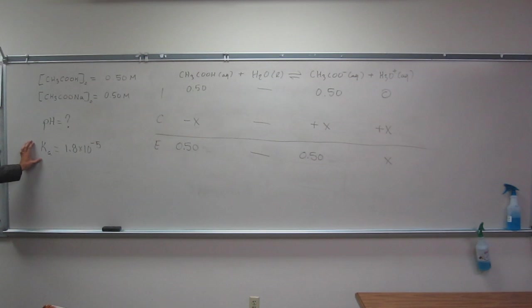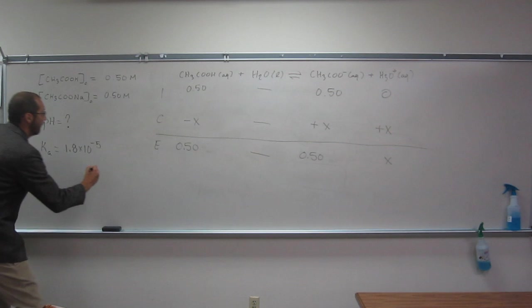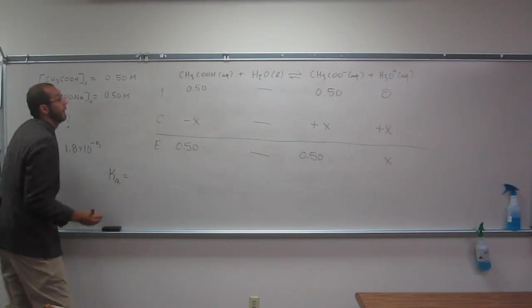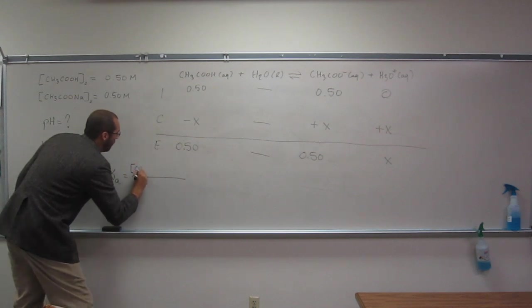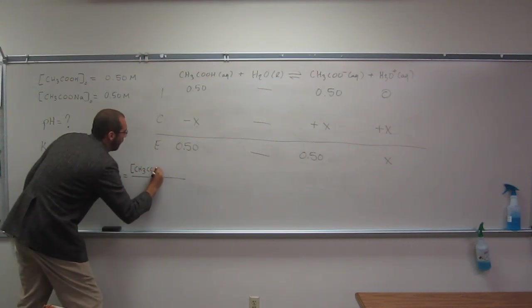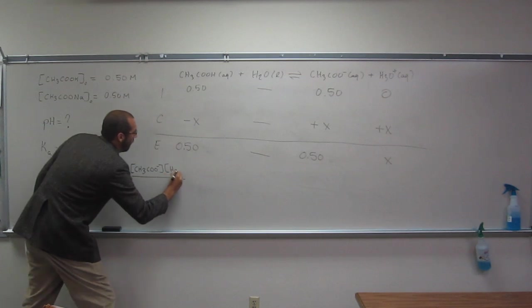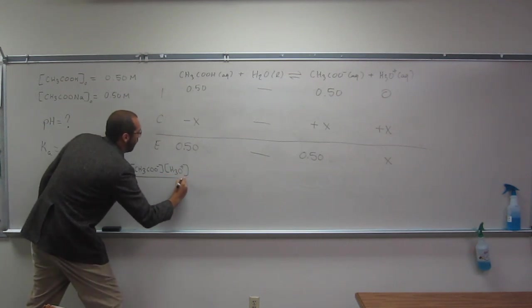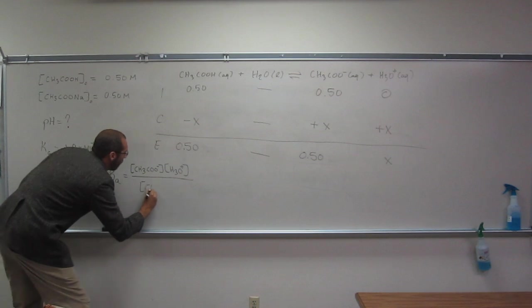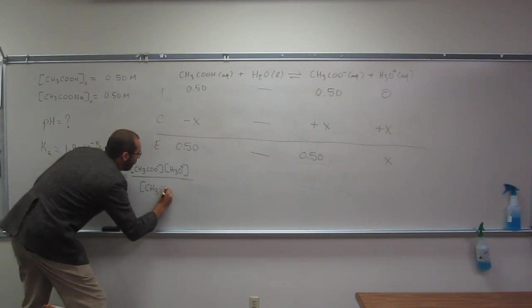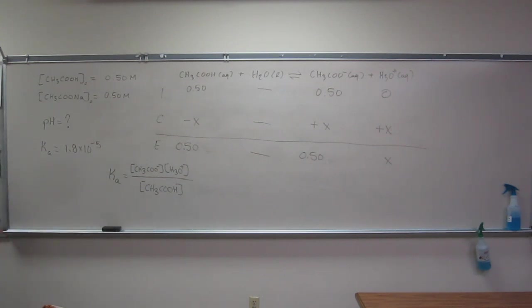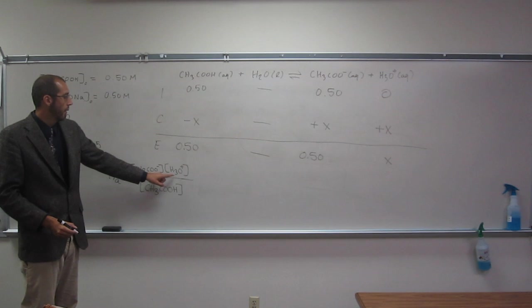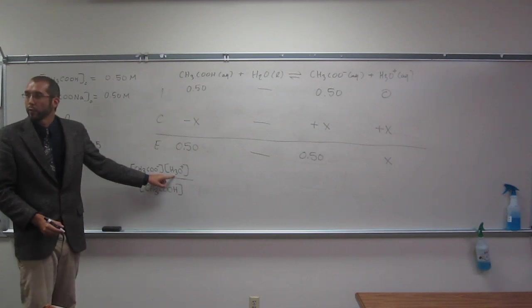So now we have to remember, well, what is Ka, the equation for it. Let's figure that out. So Ka equals... Let's rearrange it to figure out the H3O plus concentration.